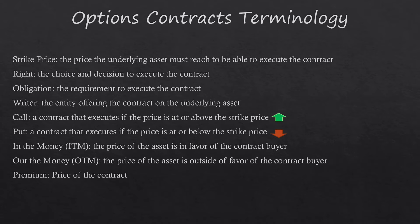The writer is the entity offering the contract on the underlying asset — they own or buy the asset assigned to the contract. A call is a type of option that executes if the price goes at or above the strike price. A put expects the contract to go below the strike price — so a call would be bullish, expecting the price to go up, and a put would be bearish, expecting the price to go down.